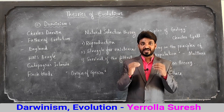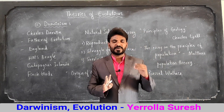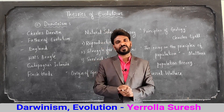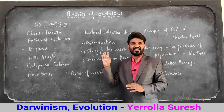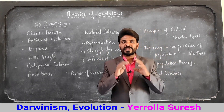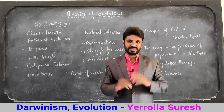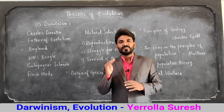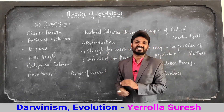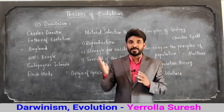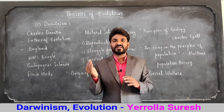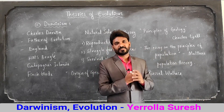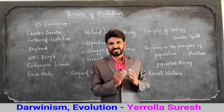Now let's understand this with an example. In a forest, some rabbits are living. The rabbits produce new babies by the process of reproduction. The baby rabbits compete with each other for different purposes and also compete with other animals and environmental factors. This competition is called struggle for existence. In this competition, if suddenly a predator like a lion or tiger comes, it tries to hunt the rabbits.